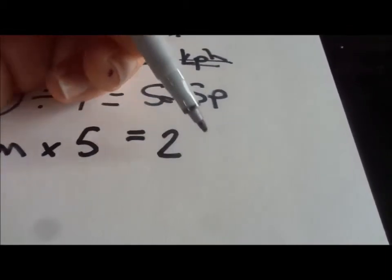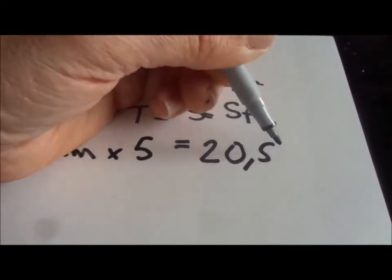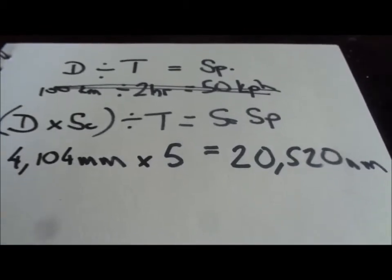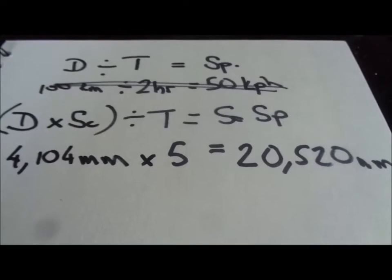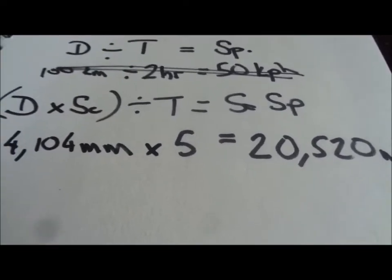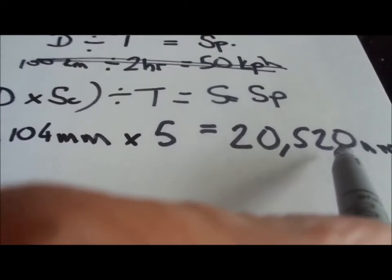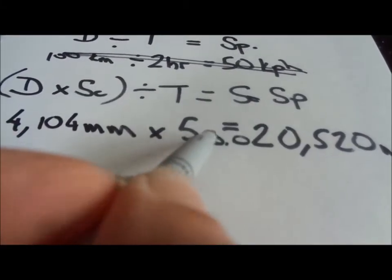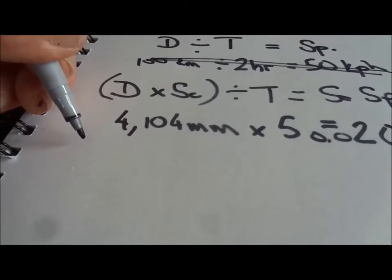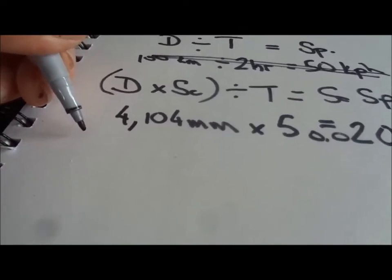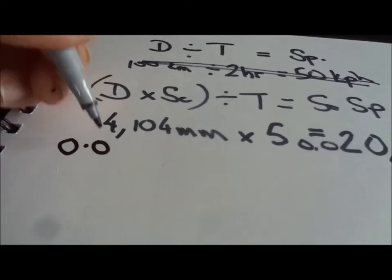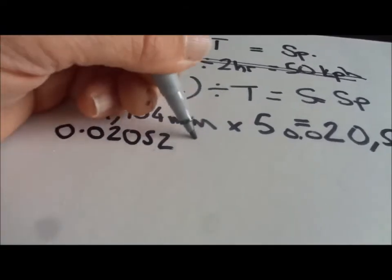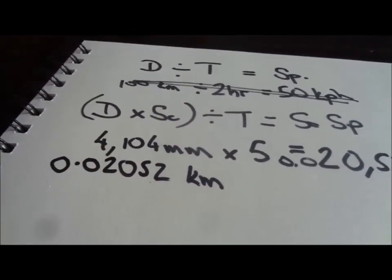Oh my goodness, Archie, absolutely right. Well done. 20,520 millimetres is the distance around our track five times. Now, of course, we need kilometres rather than millimetres. So we're going to move the decimal point. If we move it one place, we get centimetres. If we move another two, we get metres. If we move another three, we get kilometres. So that's going to be 0.02052 kilometres.